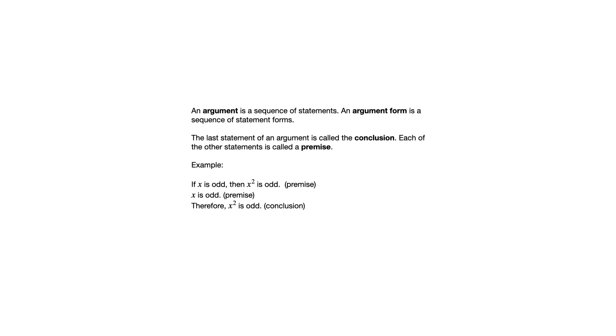That particular type of argument has a special name to it that we're going to see shortly here. Before we get to that, a symbol that you're frequently going to see in this section, and whenever we work with arguments, is this sort of three dots in the form of a triangle. And that's used in place of the word therefore. You don't have to use that, but you're going to see that pretty frequently.